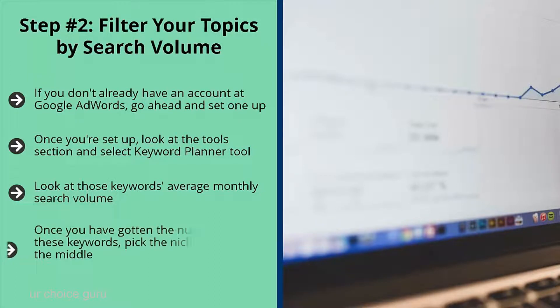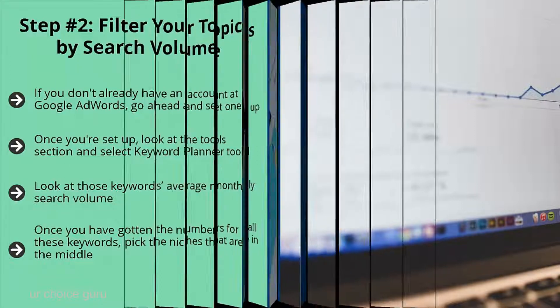Once you have listed the search volume numbers for each niche, pick the niches that are in the middle. You don't want niches that have too much search volume, because they most likely have a lot of competition. On the other hand, you don't want niches that have too little search volume.